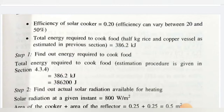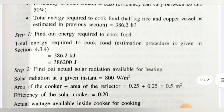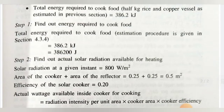Now in five steps we are going to calculate the time required to cook the food. Step number one: find out the energy required to cook the food. The estimation procedure is given in section 3.4, which we have already seen. Total energy required to cook the food is 386.2 kilojoules, that is 386,200 joules.